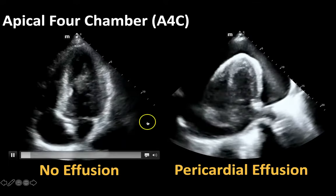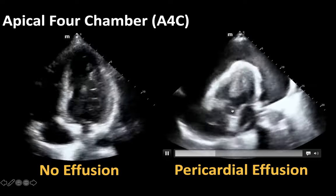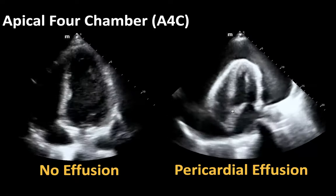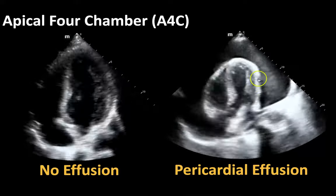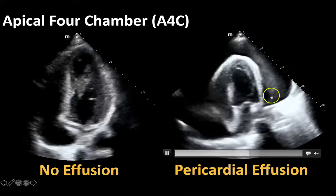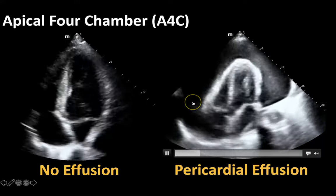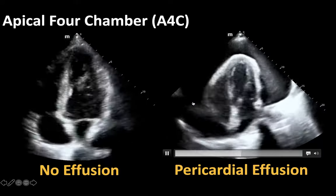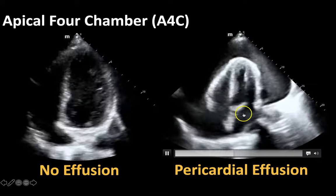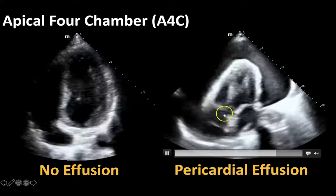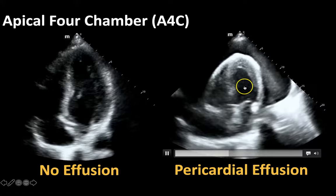This is in sharp contrast to the heart on the right side of the screen, which is the same study from the last slide — the same patient with this very large pericardial effusion, just looking at it from a different window. This is again your apical four chamber view, and you do see your four chambers here.